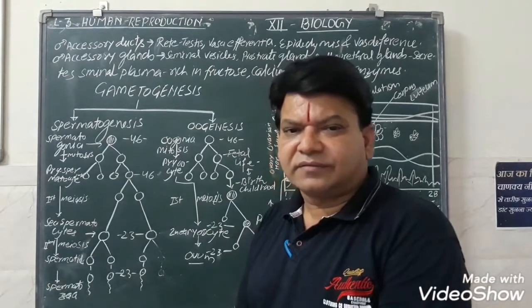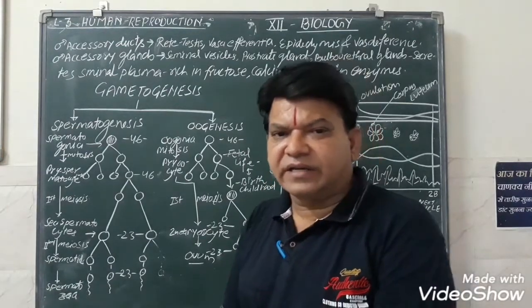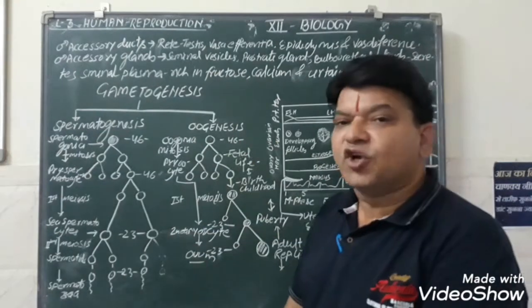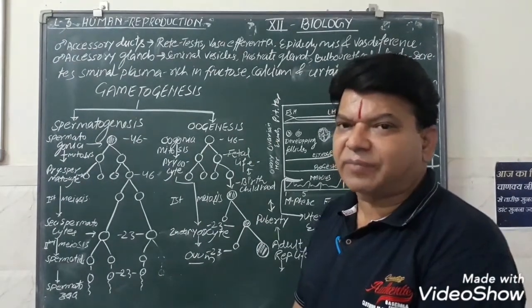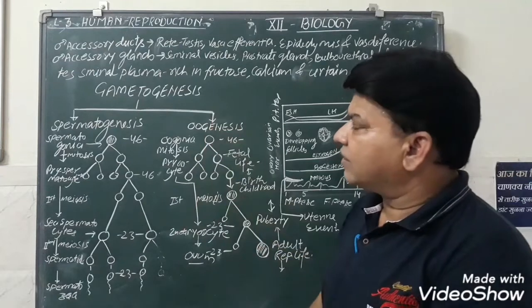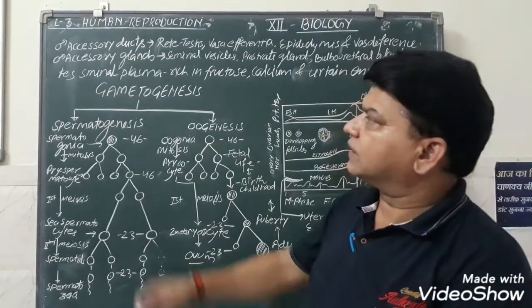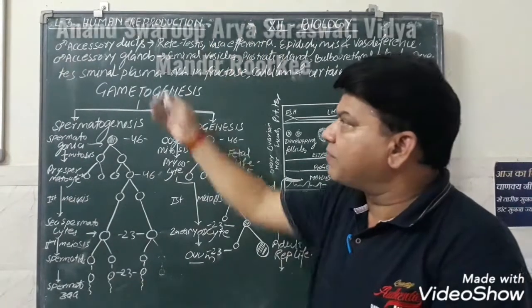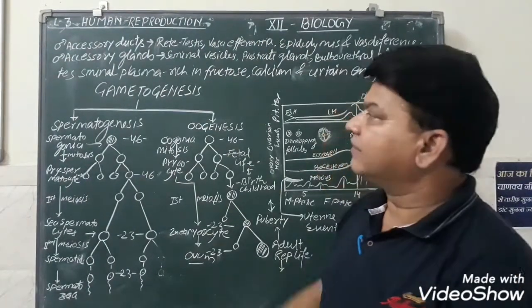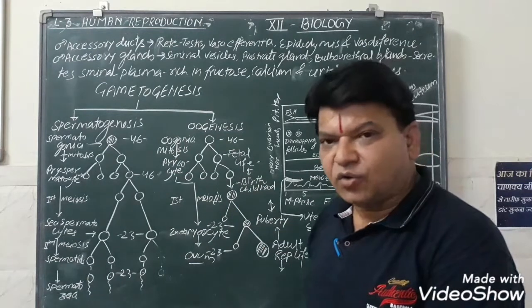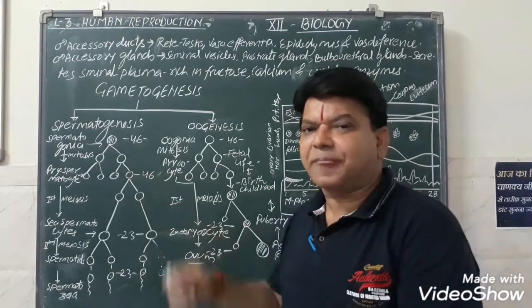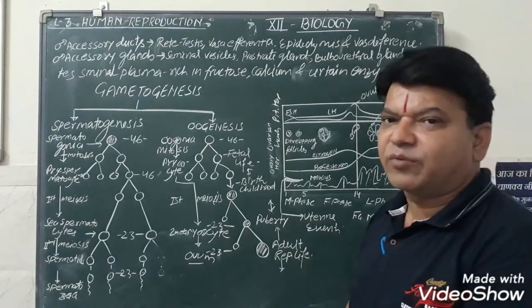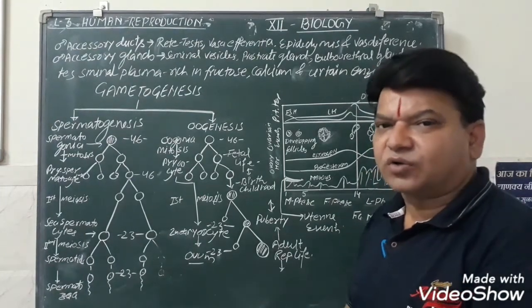Good morning students. Today we study some important topics of Lesson 3: Human Reproduction, Class 12 Biology. Today we discuss some male accessory ducts, male accessory glands, and gametogenesis including spermatogenesis, oogenesis, as well as events in the menstrual cycle in human females.